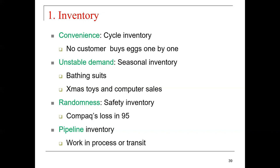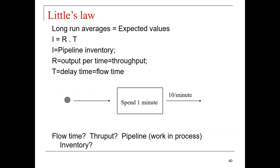For pipeline inventory — work in process or in transit — we use Little's Law to compute throughput, work in process, and cycle time. For long-run averages, we can have expected values: pipeline inventory equals the throughput output per unit time multiplied by the flow time. So, applying Little's Law — multiplying throughput times cycle time or flow time — we can get the pipeline inventory.